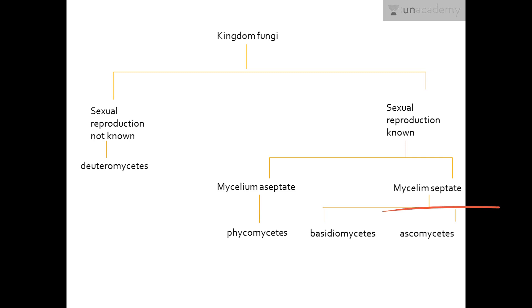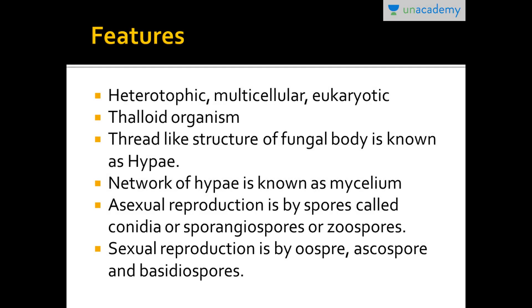They are divided into those who have aseptate mycelium and those who have septate mycelium. Those with aseptate mycelium belong to Phycomycetes, while those with septate mycelium include Basidiomycetes and Ascomycetes. The meaning of aseptate and septate mycelium will be explained later in this video.